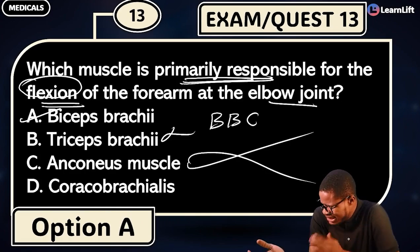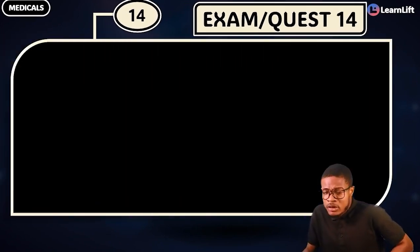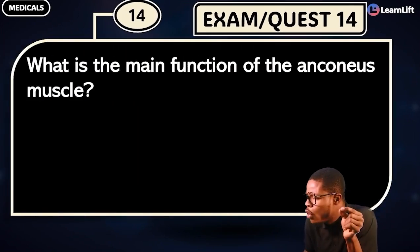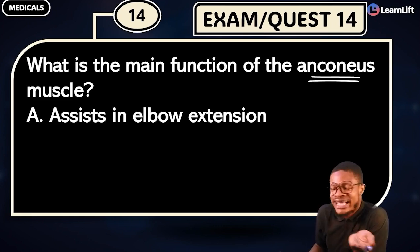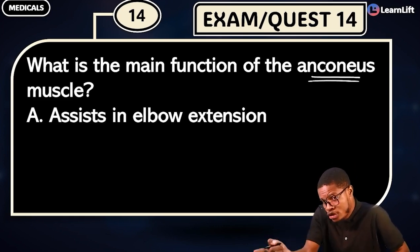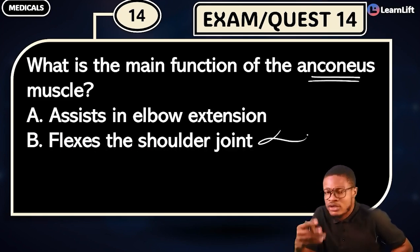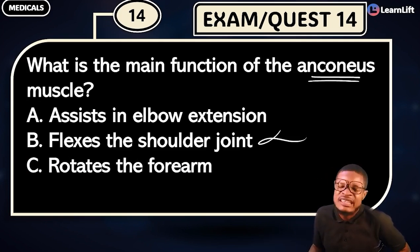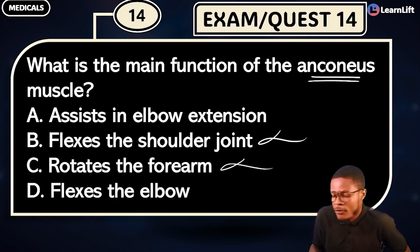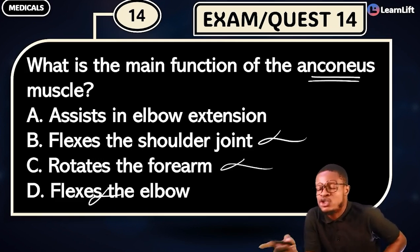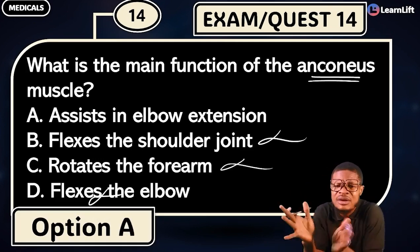Question 14: What is the main function of the anconeus muscle? Option A: assist in elbow extension. Option B: flex the shoulder joint. Option C: rotate the forearm. Option D: flex the elbow. Anconeus = elbow + posterior compartment = extension. It does not flex; it is an extensor muscle. The answer is option A — assist in elbow extension.